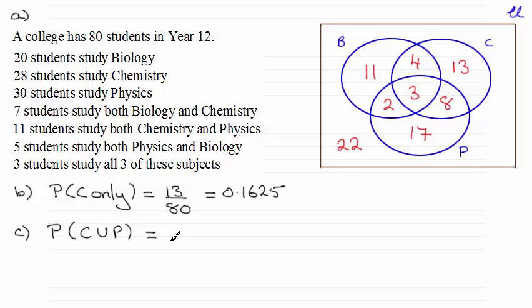And all we need to do is count up how many students there are in this region here. And if you total that, that's 4 plus 13 plus 3 plus 8 plus 2 plus 17, that comes to a total of 47 students.